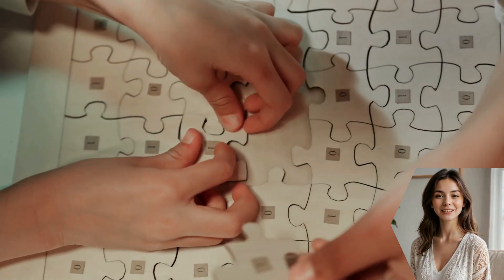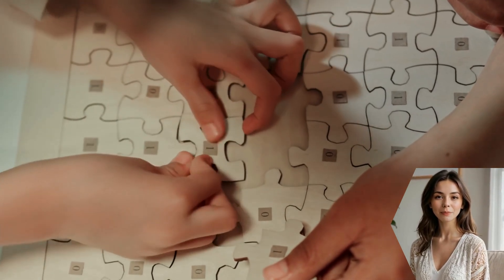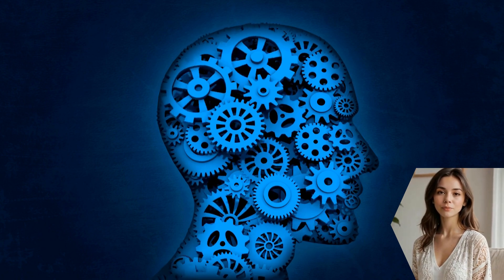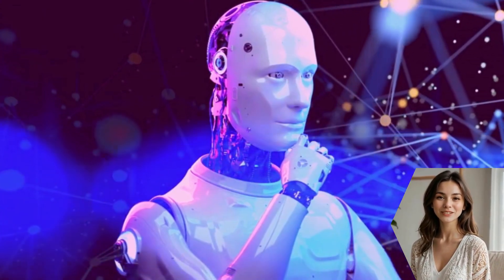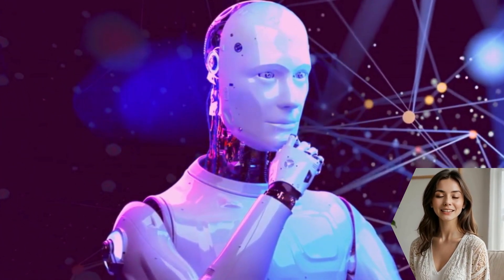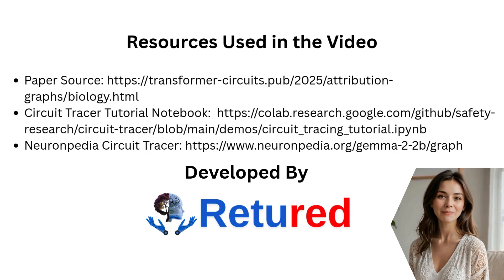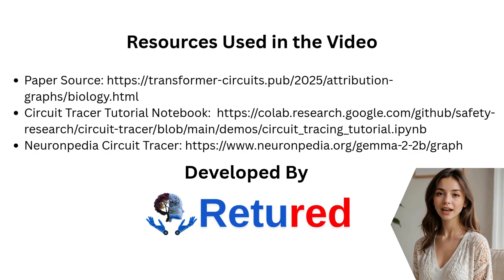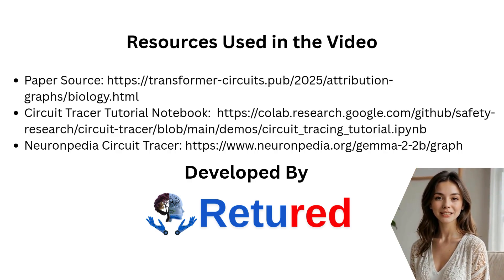So, what does this all mean? It means we are finally leaving the era of treating AI as a mystical black box. We are developing the tools to do real, descriptive science on these artificial minds. By understanding their internal biology, we can build safer, more reliable, and more aligned AI systems. This is just the beginning of a new and exciting field. The map of the AI mind is still largely unwritten, but for the first time, we have a light to guide us through the darkness. If you're curious, I highly encourage you to check out the paper and the open source tools. Who knows what you might discover?